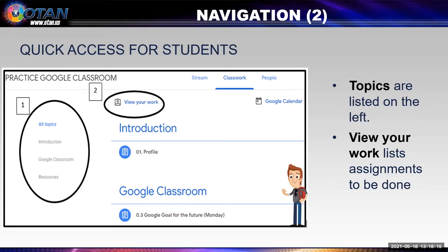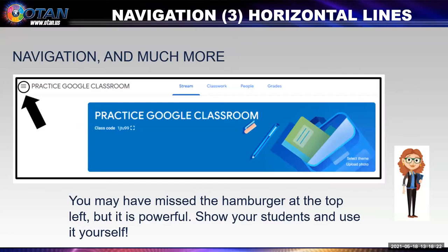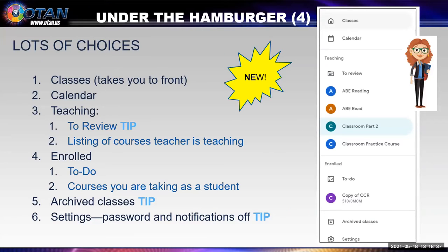That gives students a list of assignments to do, assignments that are overdue, ones that have been completed, and even graded. Go to the three horizontal lines at the top left — often referred to as a hamburger. This works for teachers and students. Once you open the menu at the top left: at one, you have a link to the screen where you can join or create; at two, there's a link to the Google Calendar where assignments are listed; at three, this is new — for the teacher, there's a division between the old to-do and the new to-review.